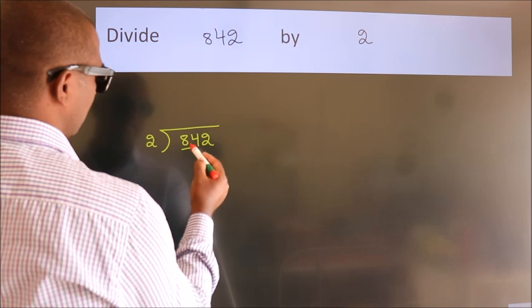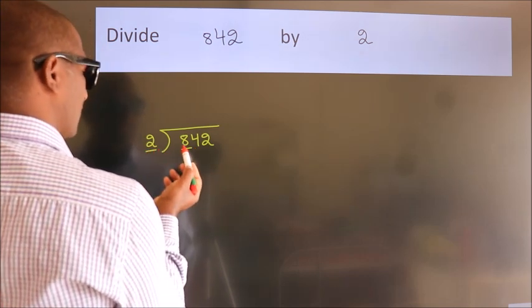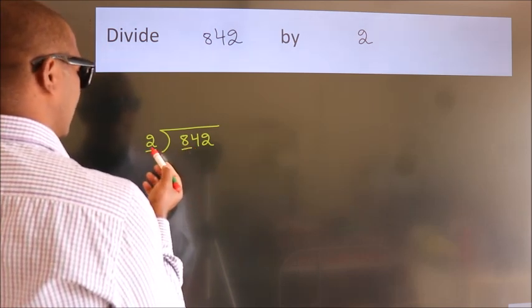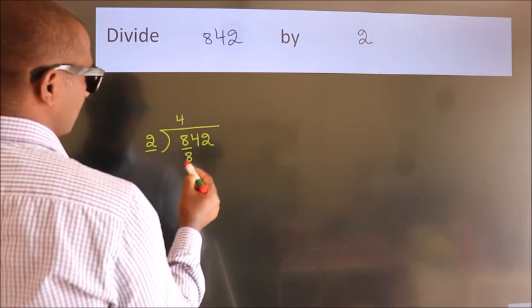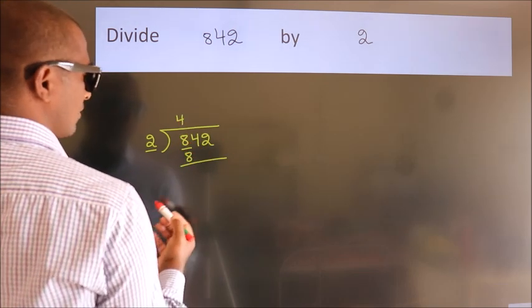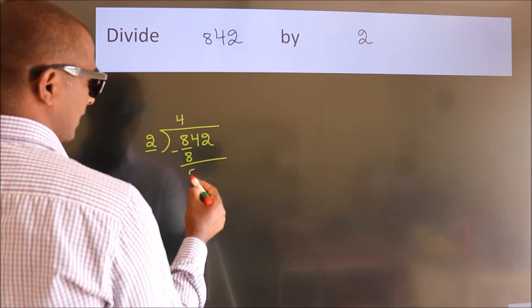Here we have 8, here 2. When do we get 8? In 2 table, 2 4s, 8. Now, we should subtract. We get 0.